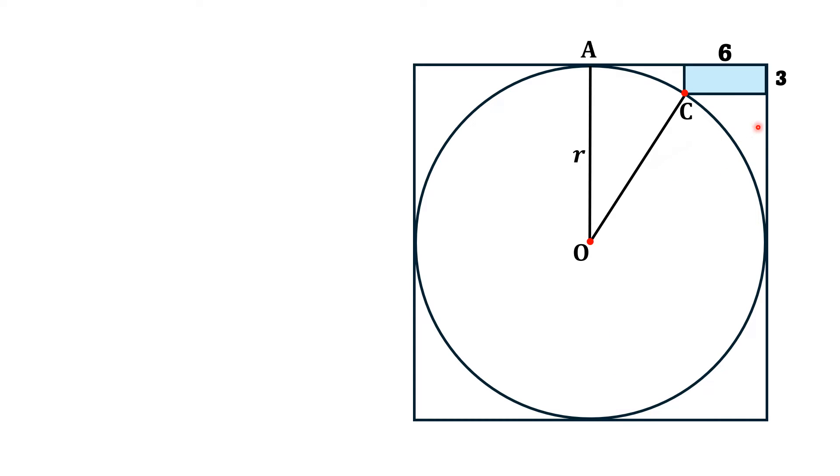If we extend this line segment to this radius, which meets OA at point B, then we can easily see that this length AB is 3 units.